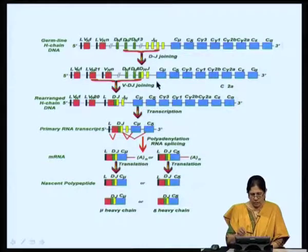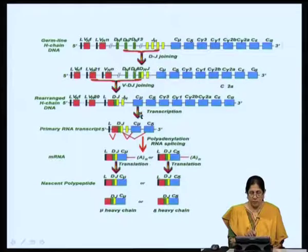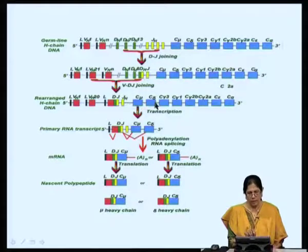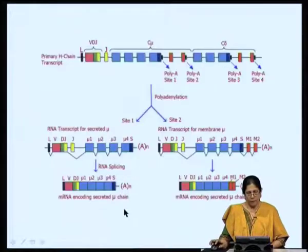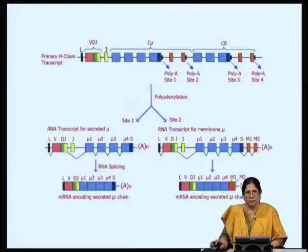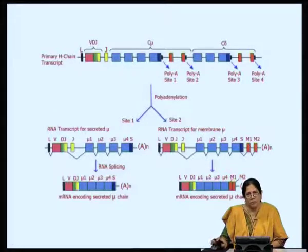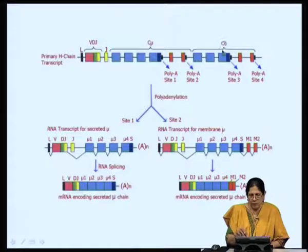When the rearranged heavy chain gene is transcribed, the primary RNA transcript associates the variable domain with the constant mu (corresponding to IgM) or constant delta (corresponding to IgD). Heavy chain reorganization is such that simultaneously the cell can produce both heavy chains corresponding to IgM as well as IgD. The constant domain of IgM is made up of domains CH1, CH2, CH3, and CH4, and for IgD it is CH1, CH2, and CH3. Each of these domains is coded for by a distinct gene segment.